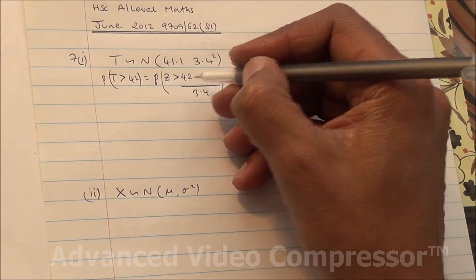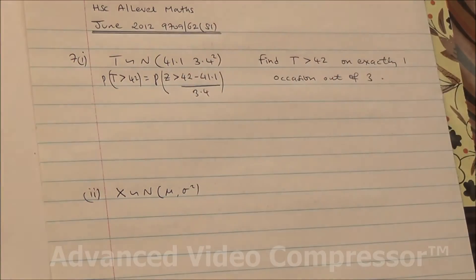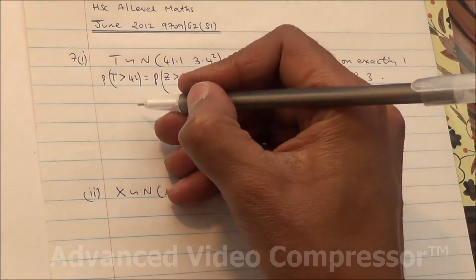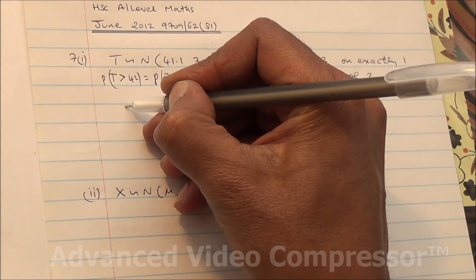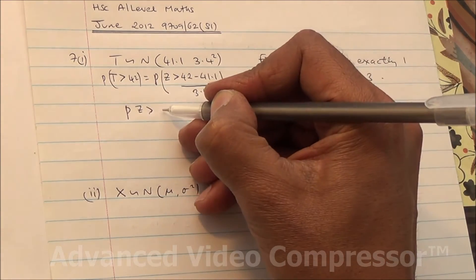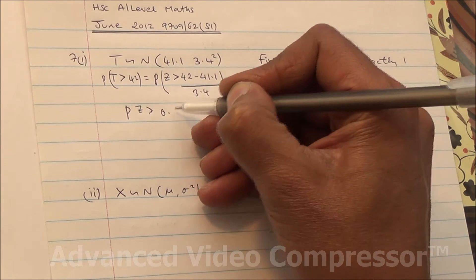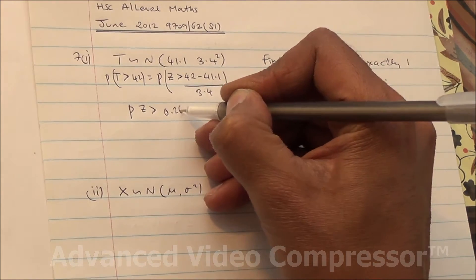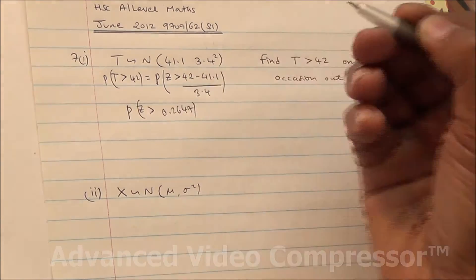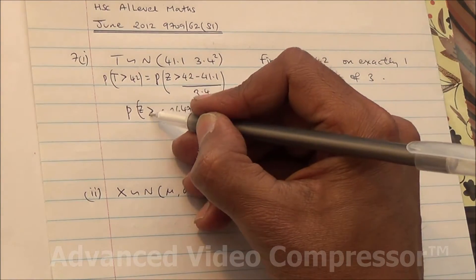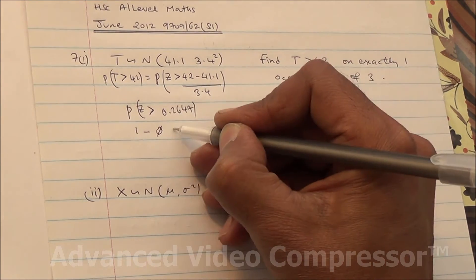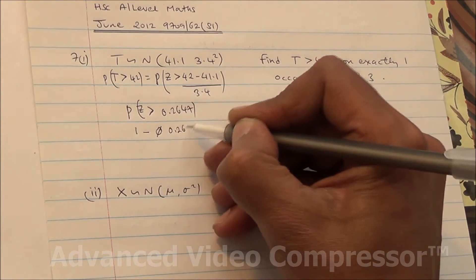Since this is positive, we have P(z > 0.2647). For a greater-than probability, we take 1 minus phi of 0.2647.